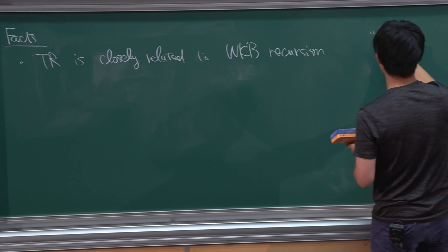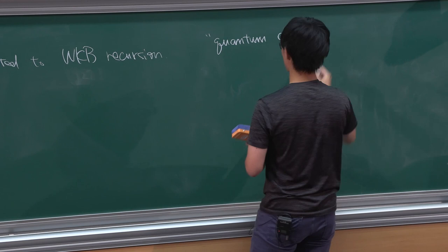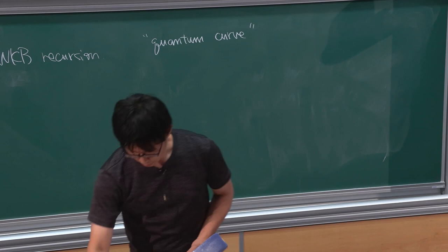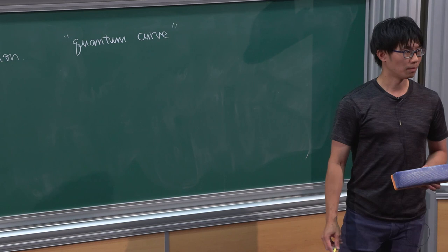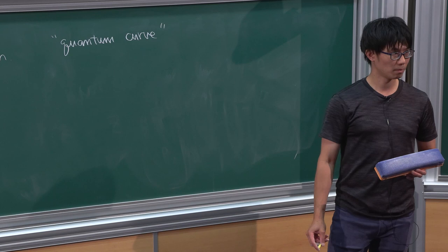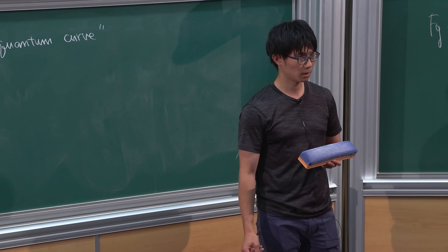This business is usually called a quantum curve because topological recursion gives one way to quantize the spectral curve. There is a question from the audience: after computing topological recursion applied to a mirror curve, you know this gives the topological string partition function. The WKB gives you the Nekrasov-Shatashvili limit.